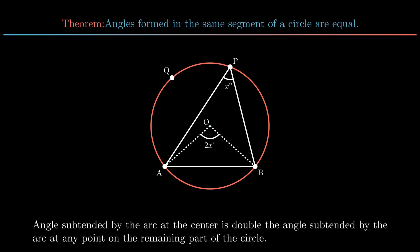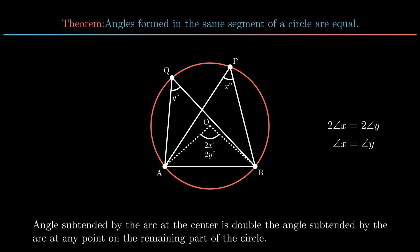Consider another point Q on the same side of the segment such that angle AQB equals Y. Now the angle at the center with reference to angle AQB is 2Y. It is clear from the figure that angle AOB with reference to point P and point Q is the same. So 2 times angle X is equal to 2 times angle Y. By cancellation law, angle X is equal to angle Y. Hence the theorem is proved.